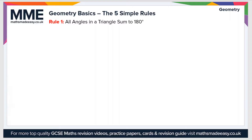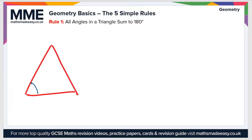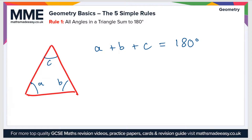Rule number one is that all angles in a triangle sum to 180 degrees. If I draw a triangle and put the angles in, let's call them a, b and c, we can say that a plus b plus c equals 180 degrees, and that is the case for all triangles.